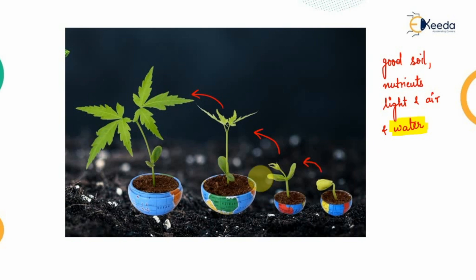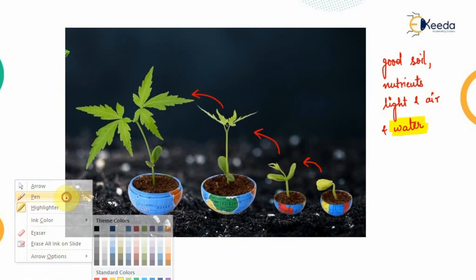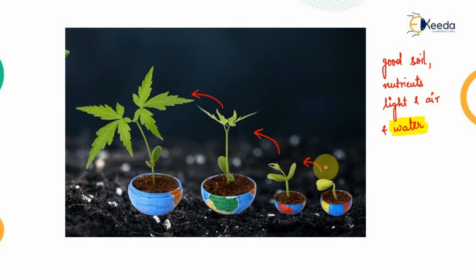Irrigation engineering deals with water availability. What we mean by water availability is that crops and plants require different amounts of water at different times.